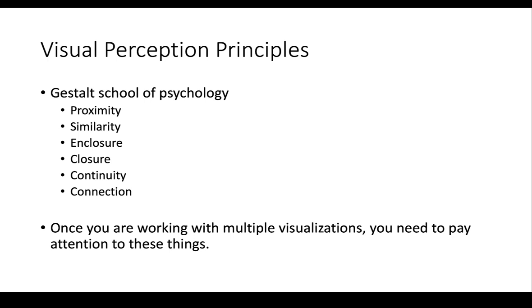There are six of these characteristics or qualities: proximity, similarity, enclosure, closure, continuity, and connection. We'll talk about each one of these and what they mean and which ones are stronger and weaker. We need to pay attention to these things because once we start placing things on a dashboard, the brain's going to be using things like placement, proximity, closure, or connection to interpret that these two graphs go together and these two do not.